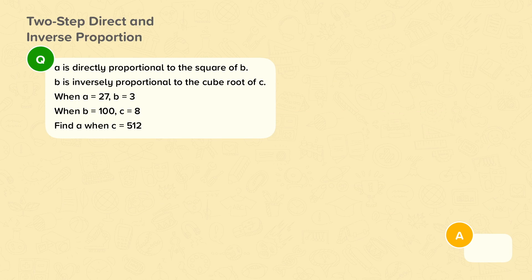A is directly proportional to the square of B. B is inversely proportional to the cube root of C. When A equals 27, B equals 3. When B equals 100, C equals 8. Find A when C equals 512. In this question we need to find the value of A given the value of C, but we do not have a direct link between A and C. So we need to find the relationship between A and B, and B and C, and then use both of these to find the value of A.